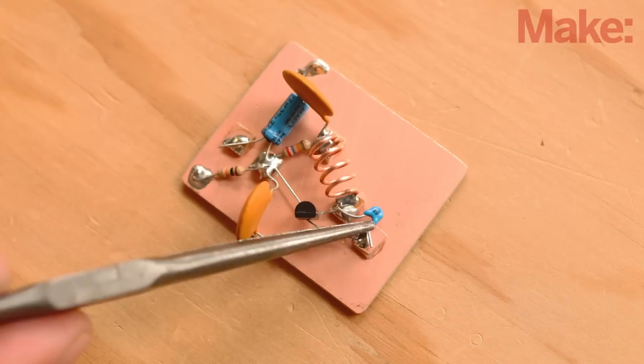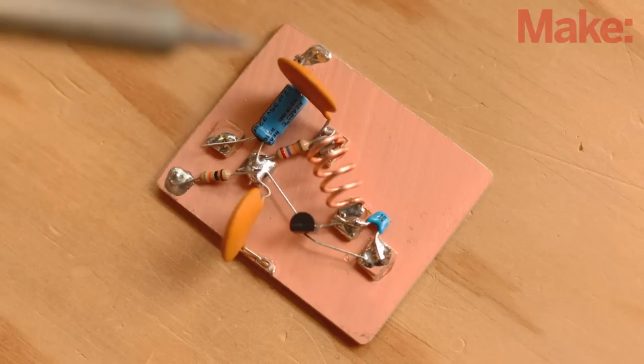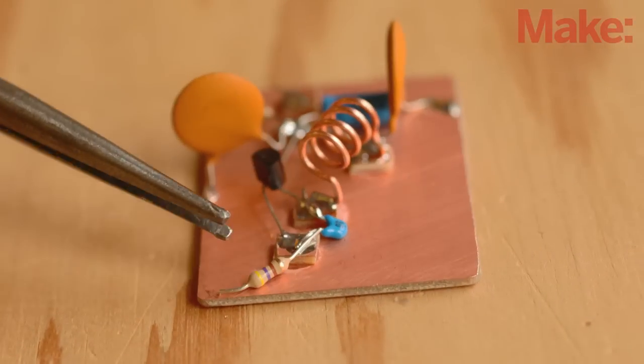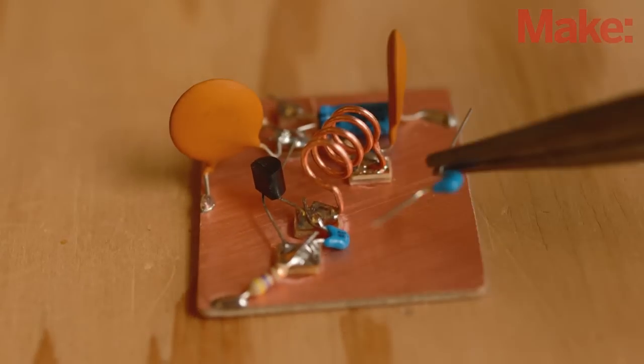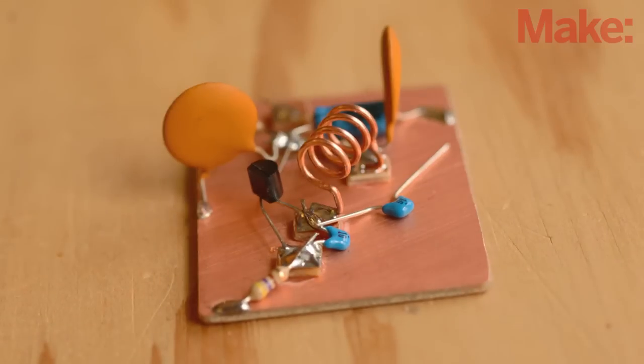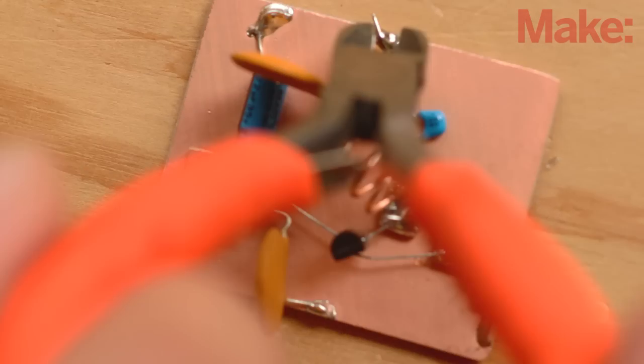Now solder one 10 picofarad ceramic disc capacitor across the transistor's collector and emitter and a 470 ohm resistor between its emitter and ground. Finally solder a second 10 picofarad ceramic disc capacitor between the coil and the ground plane as shown.